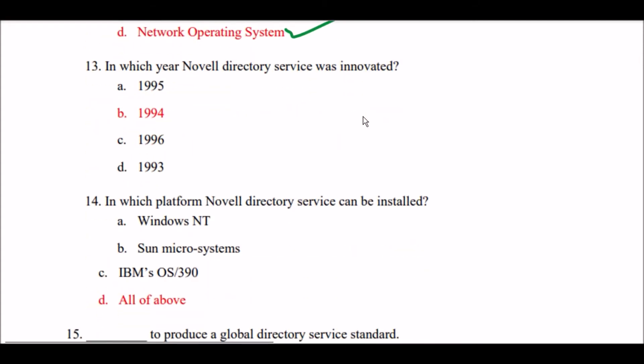Next question: In which year was Novell directory service innovated? Option A: 1995. Option B: 1994. Option C: 1996. Option D: 1993. The right answer is Option B — in 1994, Novell directory service was innovated.